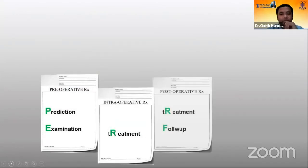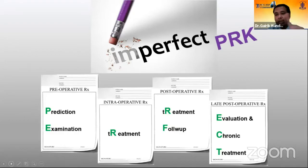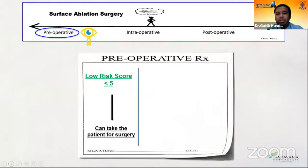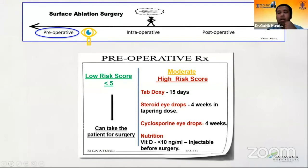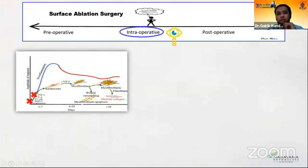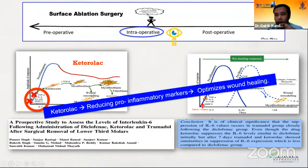PRK PERFECT is an acronym which looks at Prediction, Examination, Treatment, Following of these patients, and also a chronic evaluation and treatment of late-onset post-PRK HAZE. Preoperatively, patients with a score less than 5 can be taken up for surgery, but if they have moderate or high risk, it's important to control preoperative inflammation through doxycycline — an MMP9 inhibitor — topical steroids, cyclosporine, and correcting nutritional imbalances such as vitamin D deficiency. Intraoperatively, we have also published on the role of NSAIDs such as ketorolac. Ketorolac intraoperative soaked BCLs help in reduction of pro-inflammatory markers, optimizing wound healing post-PRK.